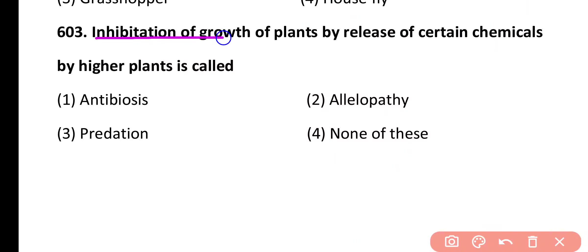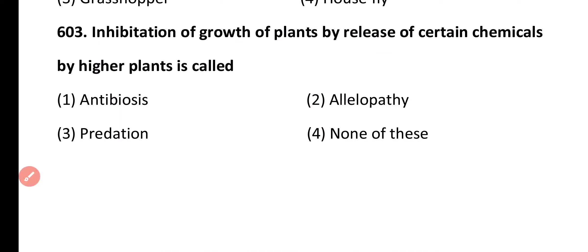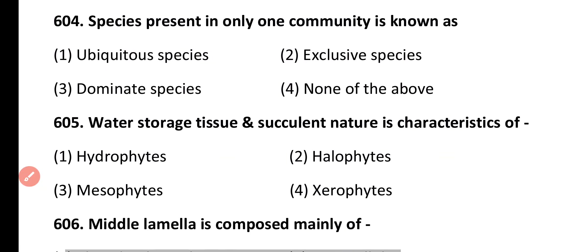Question 603. Inhibition of growth of plants by release of certain chemicals by higher plants is called: antibiosis, allelopathy, predation, none of these. Correct answer is option 2. Allelopathy is a mechanism in which one plant releases certain toxic chemicals which causes the inhibition of growth of other plants.